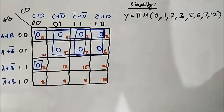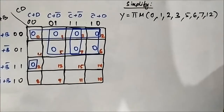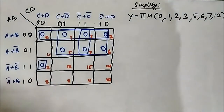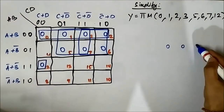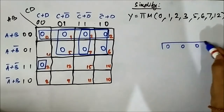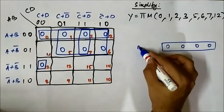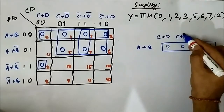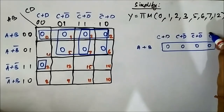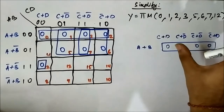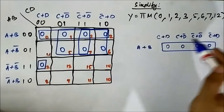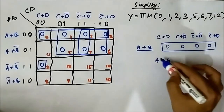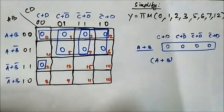All the marked cells have been covered with groups. Now we have to identify the common variables. For the quad 0, 1, 3, 2: the horizontal component is A or B. The vertical components are C or D, C or D bar, C bar or D bar, C bar or D — there is nothing common in the vertical side. So for this quad, A or B is the common set of variables.